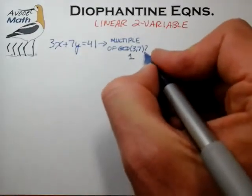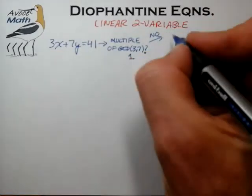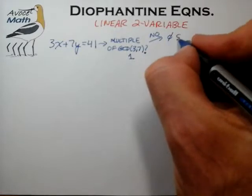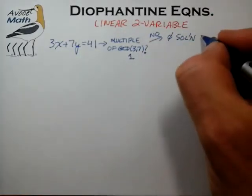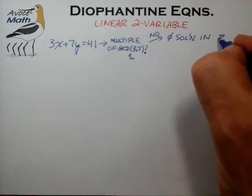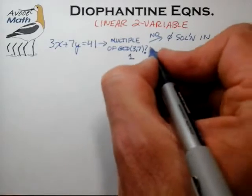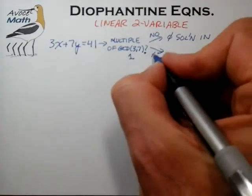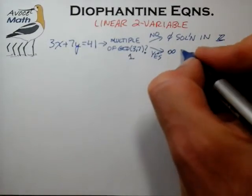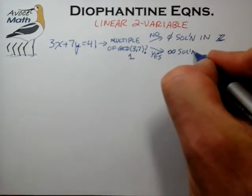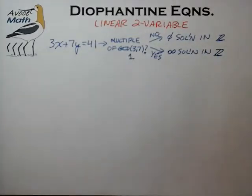The answer to this question can come out in two possible ways. The answer could be no, in which case we can conclude that there are no solutions to this Diophantine equation in the set of all integers, positive and negative. And if the answer is yes, then we can conclude that there are in fact an infinite number of solutions in all integers Z for this equation.